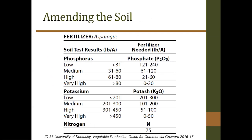This table comes from the University of Kentucky's ID-36 Vegetable Production Guide. I like this guide for all kinds of vegetable crops because it directly gives you soil test results and a range of fertilizer to apply. It's very soil-test oriented, which is exactly what we need for phosphorus and potassium. It's a really good example of how to interpret test results and determine how much phosphate and potash you need to apply.